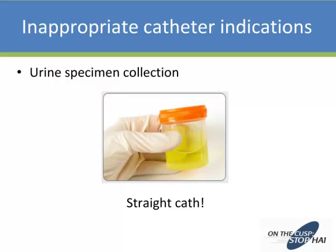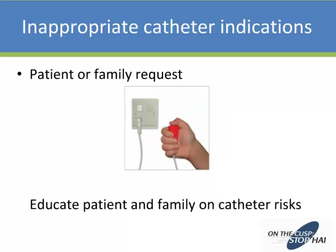Urine specimen collection is another opportunity. I still see many staff nurses who will say they need a specimen and the patient can't provide one, so they'll cath for the specimen — which is okay — but then they choose to use an indwelling catheter and leave it in because the patient is going to be admitted anyway. There's really no good indication for this. In cases where patients are unable to provide a sterile specimen, a straight cath is the more appropriate option. Patient or family request is another area — many family members falsely believe it will protect skin or prevent falls. Our job is to educate the patient and family that catheters aren't going to protect their skin or prevent falls, and the risk associated with a catheter-associated urinary tract infection does not outweigh the convenience.